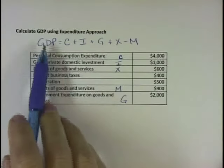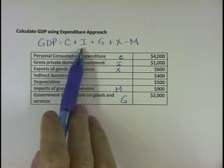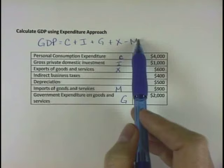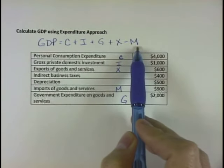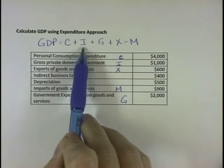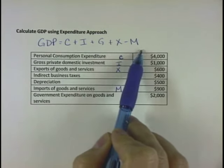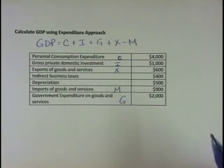So let's review: GDP is C plus I plus G plus X minus M. The only negative component is M. We're going to add consumption, investment, government, and exports, and then subtract out imports.